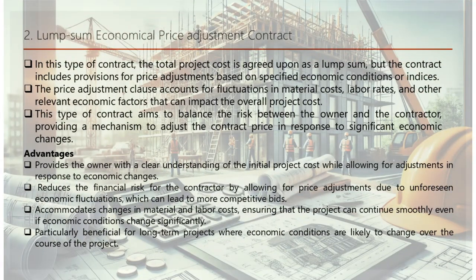Moving on to the lump sum economical price adjustment contract — similar to a standard lump sum contract, but with an important difference: it includes provisions for price adjustments based on specified economic conditions or indices. The total project cost is agreed upon as a lump sum; however, unlike a traditional lump sum contract, it includes a price adjustment clause accounting for fluctuations in material costs, labor rates, and other relevant economic factors. This contract is designed to balance the risk between the owner and contractor by providing a mechanism to adjust the price in response to significant economic changes.